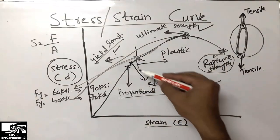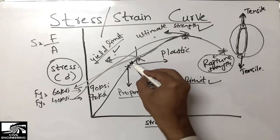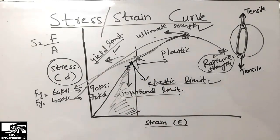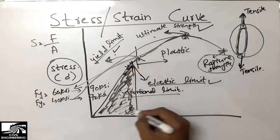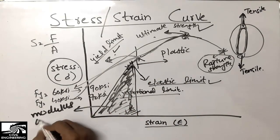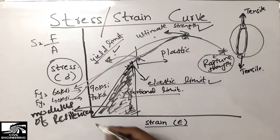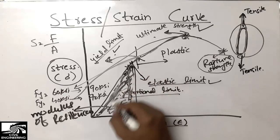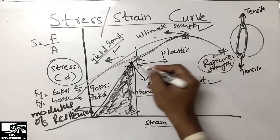Another very important property is the modulus of resilience. Up to the elastic limit, the area under the elastic curve represents the energy stored in the material — we call this the modulus of resilience. We can find it by calculating the area of the triangle under the elastic portion of the stress-strain curve.